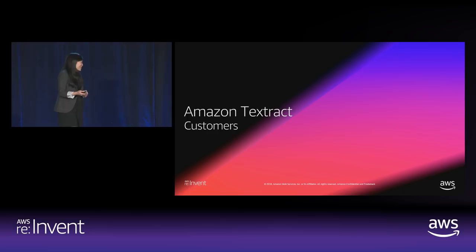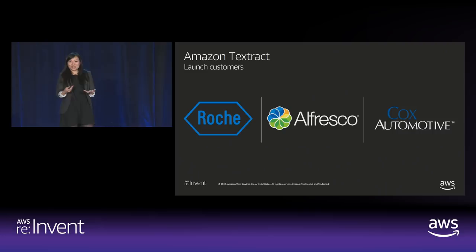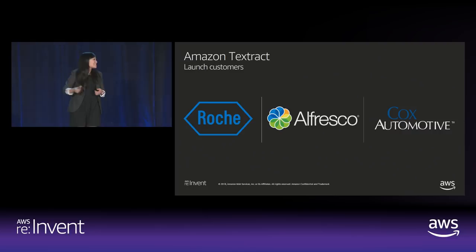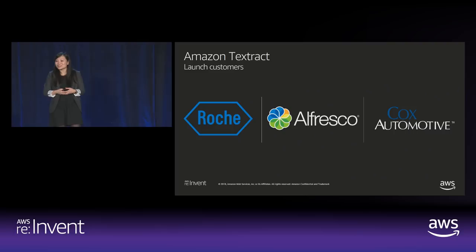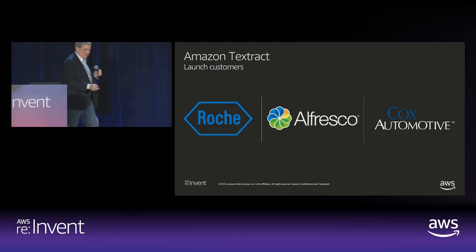We have a few launch customers we're super excited about: Roche, Alfresco, and Cox Automotive — three very different customers with very interesting use cases you can check out on our reference customer page. One of our customers is here with us: Alfresco, a partner who has been in the document capture business for many years. I'm going to invite John Newton, CTO of Alfresco, to describe how Amazon Textract will help them.